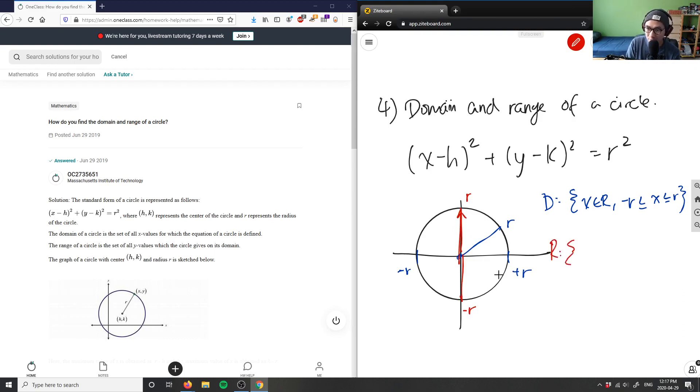So I can say that the range here would then also be y belongs to a set of real numbers but it's also in between minus r and positive r here. So these two would be my domain and range for my circle here.